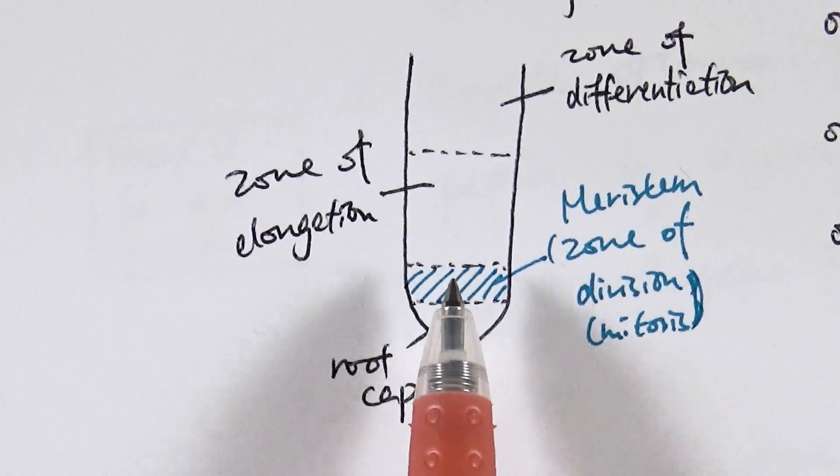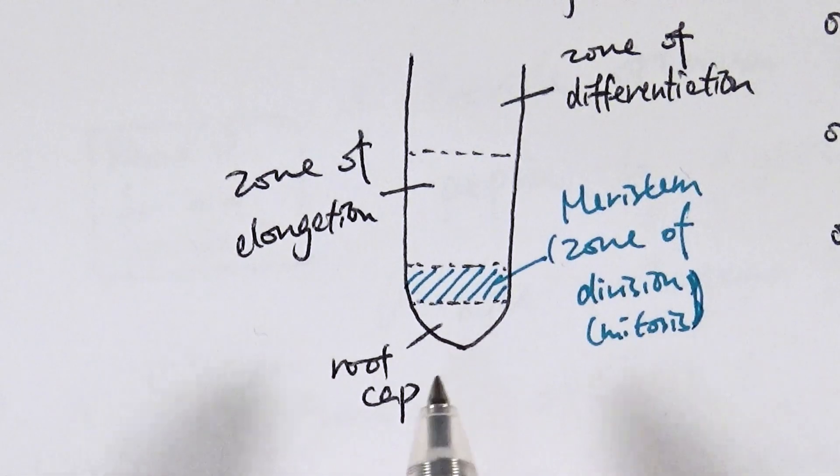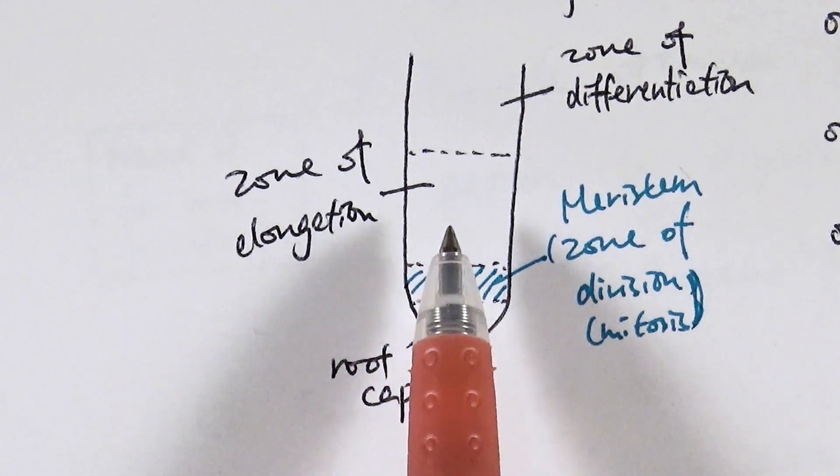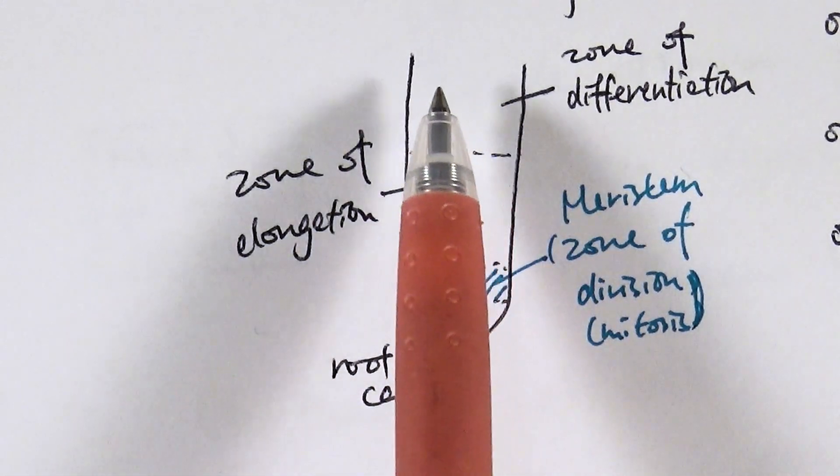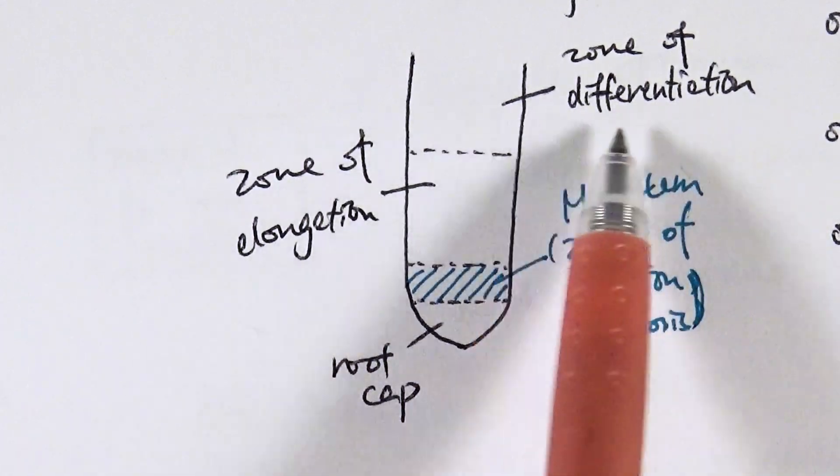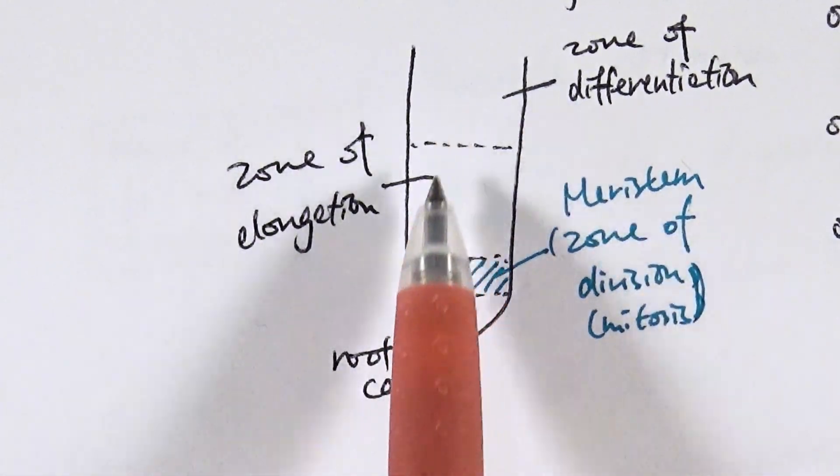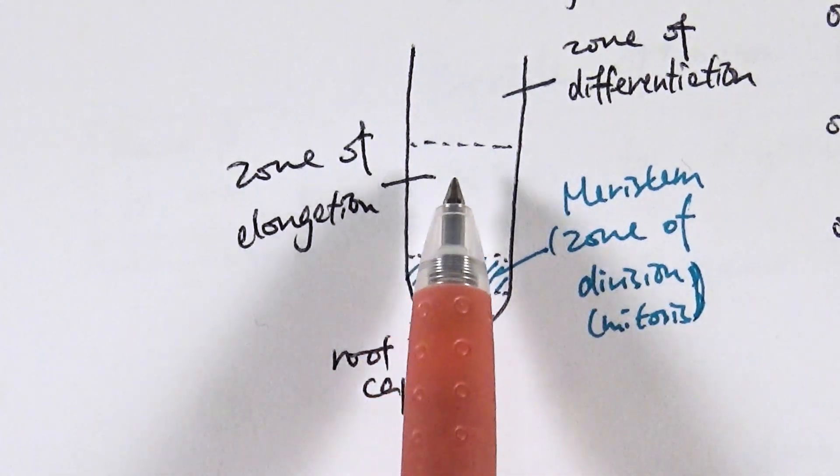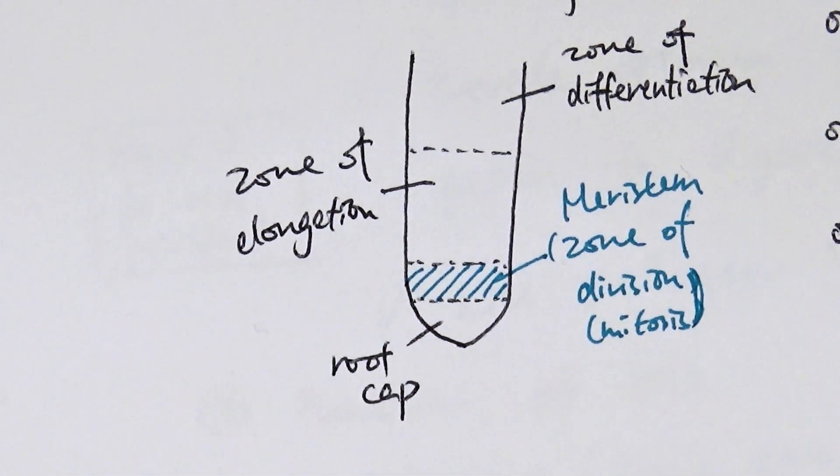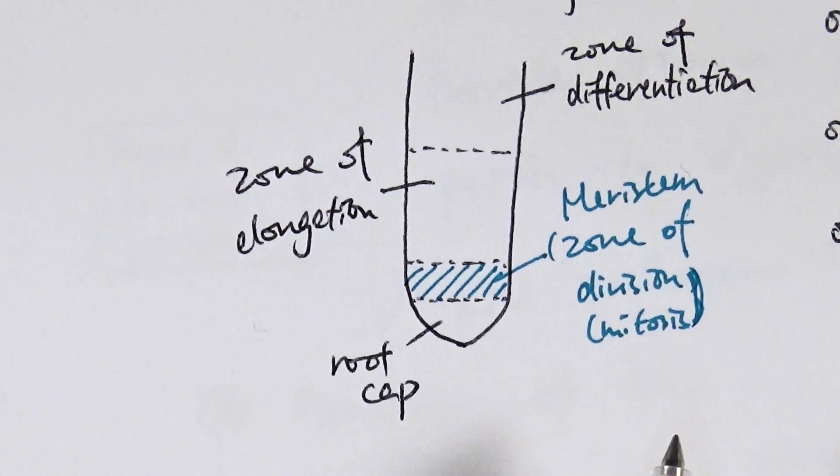Zone of elongation, where the cells that are made from the meristem, or the stem cells developed from the meristem, are going to become bigger. And then once they get to this part, they become, they're able to differentiate into other cell types. So in this case, differentiate into root cells or root hair cells. So be very aware of where you find the stem cells, which is in the meristem.